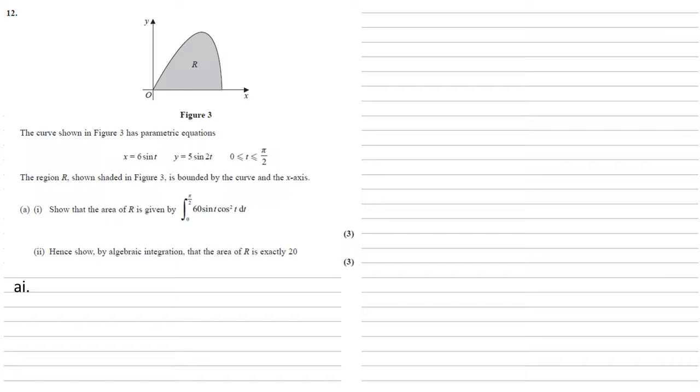We need to show that the area of R is given by the integral between 0 and pi over 2 of 60 sine t cos squared t dt. First, let's check our bounds. We want the points where it crosses the x-axis, so the points where y equals 0. We know that y equals 5 sine 2t. For y equals 0, t would have to be 0 and pi over 2, which are our original bounds. Hence, the bounds on the integral are 0 and pi over 2.